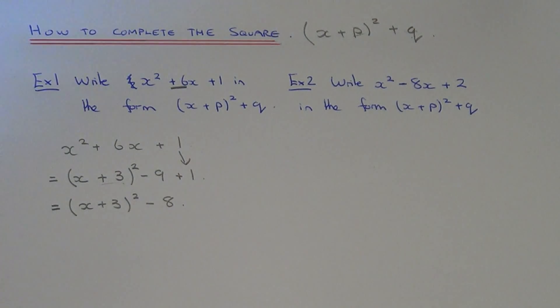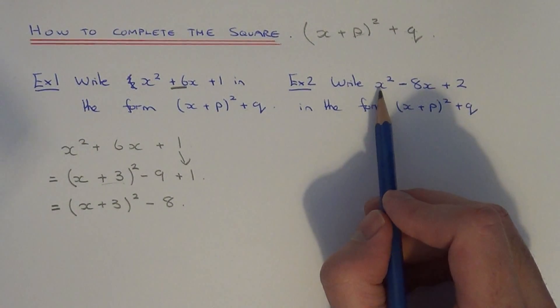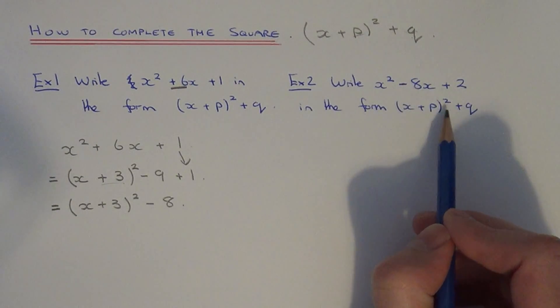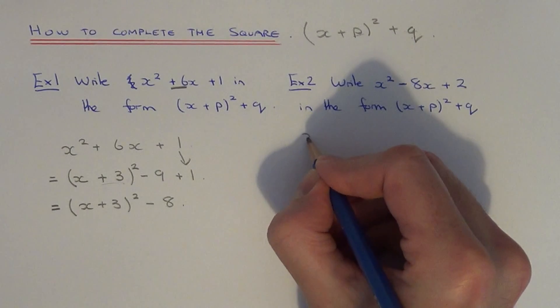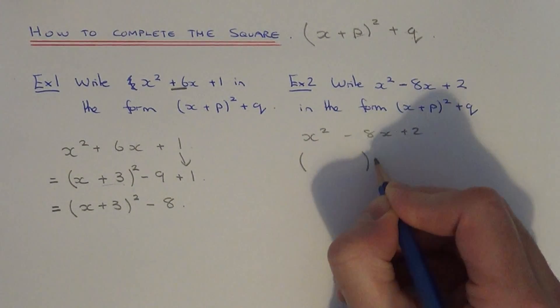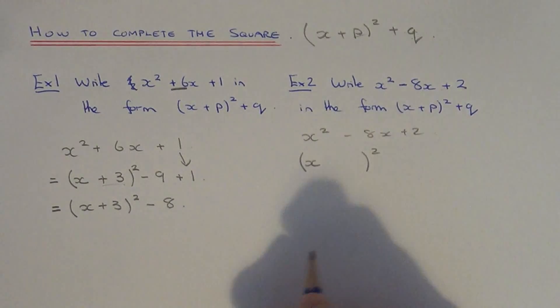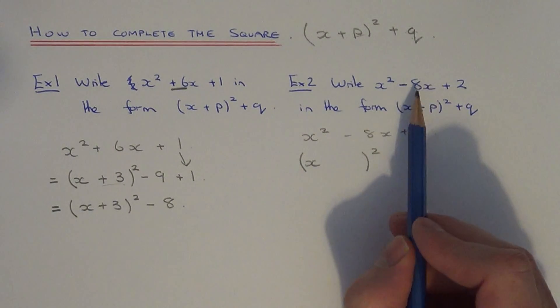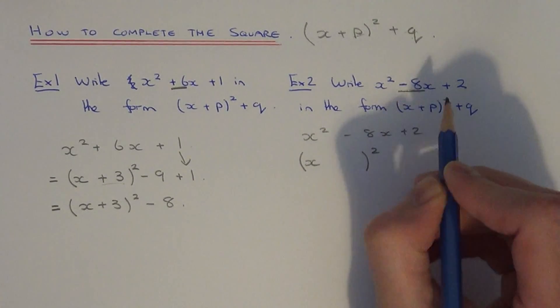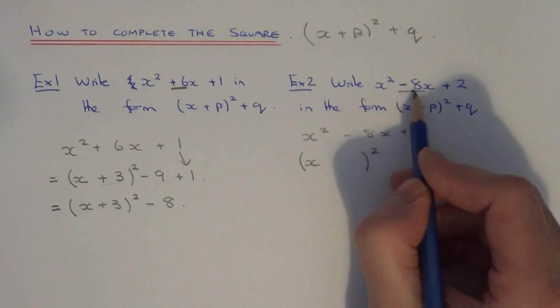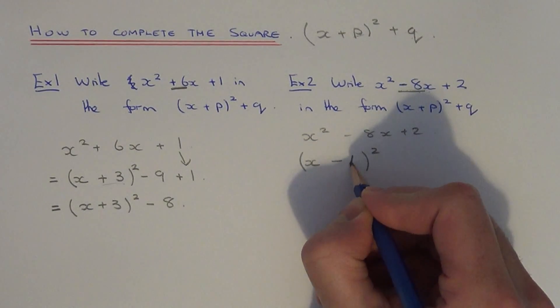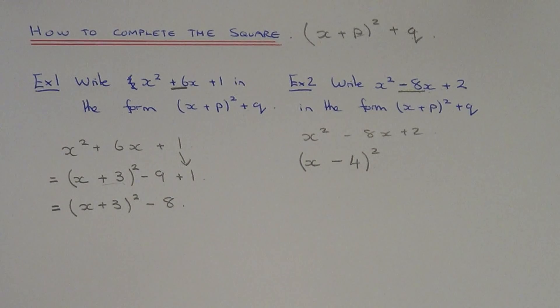Let's move on to example 2. We've got to write x squared minus 8x plus 2 in the form x plus p squared plus q. The first thing you need to do is work out p. Do this by halving the number before x. This time the number before x is minus 8. Half of minus 8 is minus 4, so I'll put this inside the bracket. So p is minus 4.